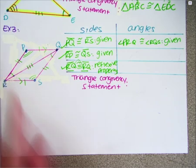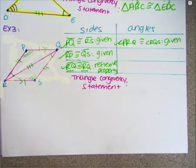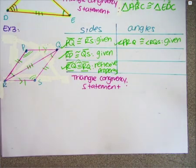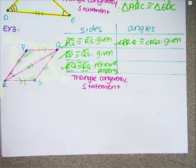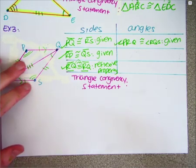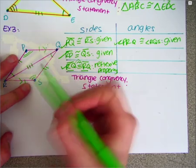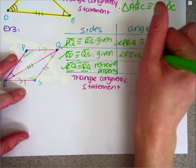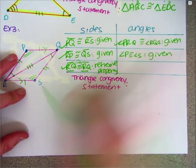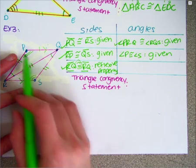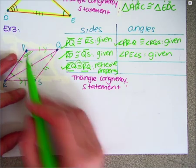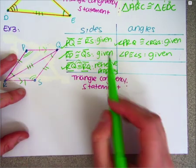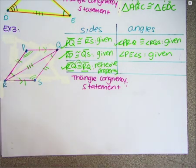I spot another pair of congruent angles — both have two arcs. Angle P is congruent to angle S, also because it was given. I can call each of these by one letter because angle P is the only angle at that vertex and angle S only has one angle at that vertex. That's my second angle — check.